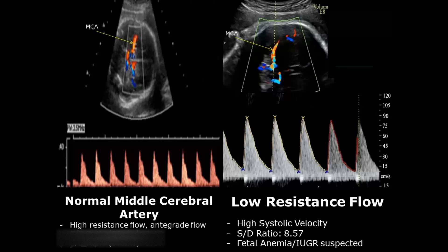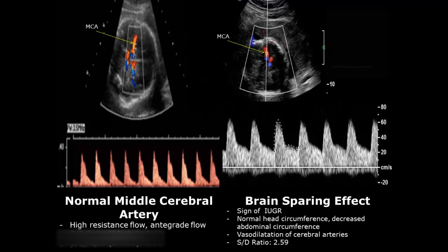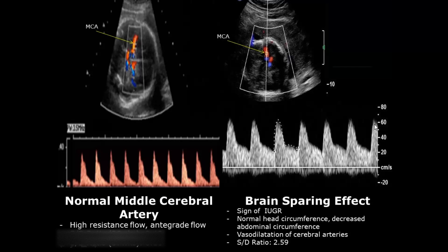The brain-sparing effect causes this low-resistance flow, which is an abnormality and a sign of fetal growth restriction. The head circumference can be normal, but the abdominal circumference is decreased. This leads to compensatory mechanisms causing vasodilatation of the cerebral arteries, producing a low-resistance flow pattern.